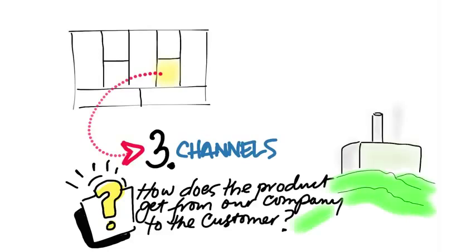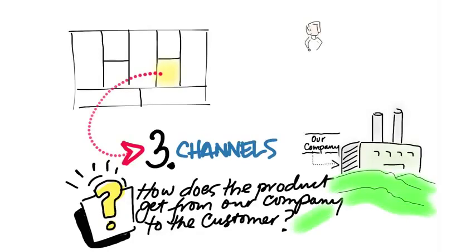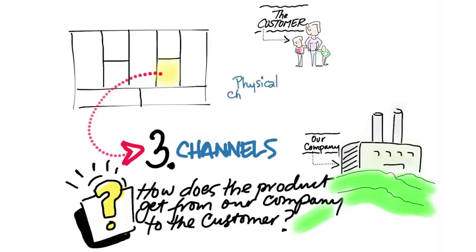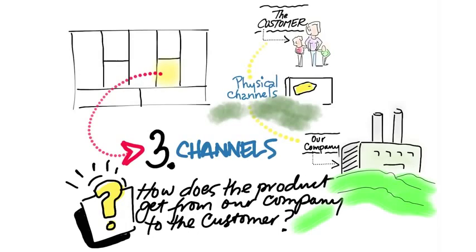Now when companies first started, they were essentially manufacturing concerns, and they hired agents — outsiders — to be their sales channel. The first types of companies made physical products, and therefore had physical channels: salespeople, stores, etc.